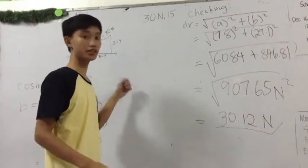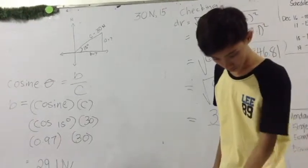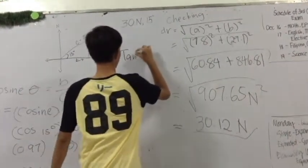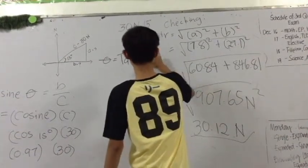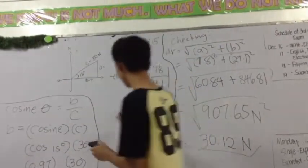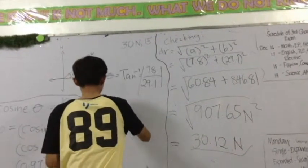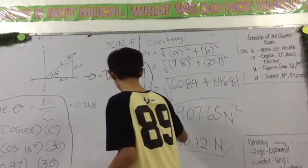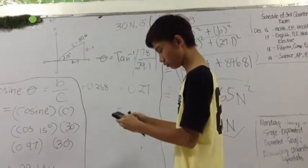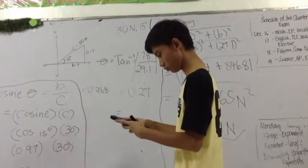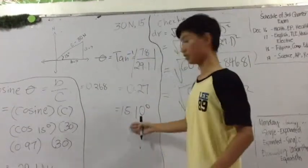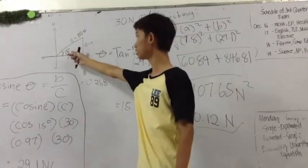Now we will solve for the angle using tangent. The angle equals tan⁻¹ of 7.8 divided by 29.1. The result is 0.268, which rounds to 0.27. Press shift then tan on the calculator. The answer is 15.10 degrees. As you can see, 15.10 degrees is very close to 15 degrees, confirming our solution.